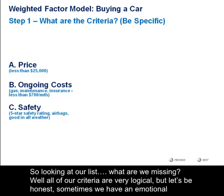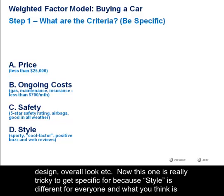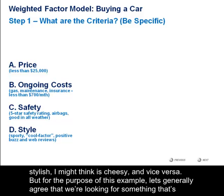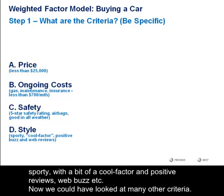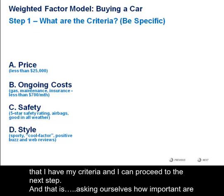So looking at our list, what are we missing? Well, all of our criteria are very logical, but let's be honest — sometimes we have an emotional connection to a car, it just looks cool. So we have to include style, because a lot of our decision may be based on color, design, and the overall look. Now, this one is really tricky to get specific for, because style is different for everyone. But for the purpose of this example, let's generally agree that we're looking for something that's sporty, with a bit of a cool factor, positive web reviews, buzz, etc. We could have looked at many other criteria, however it's important that we really just focus in on our top priorities — otherwise the results are going to get watered down. So looking at my list, I'm happy that I have my criteria, and I can proceed to the next step.